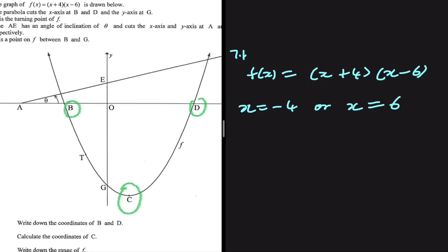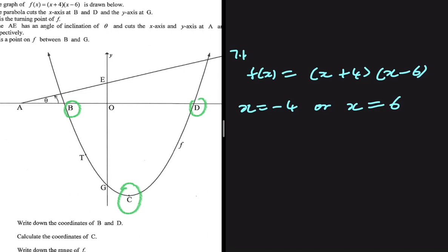Between -4 and 6, the x-coordinate of B is -4 and the y-coordinate is 0 because it is the x-intercept. So the coordinates of B are (-4, 0). The coordinates of D are (6, 0). And just like that, we've answered 7.1.